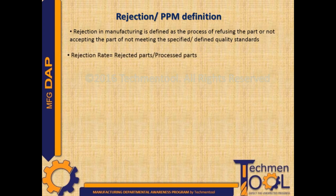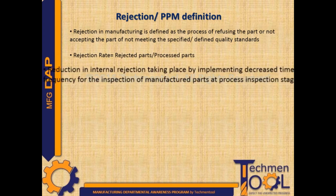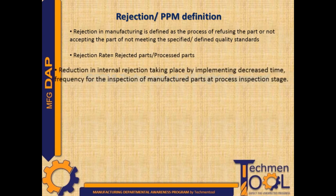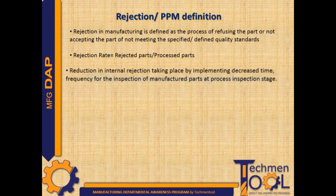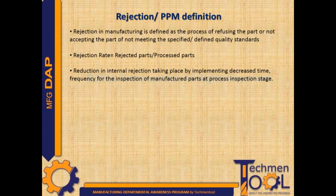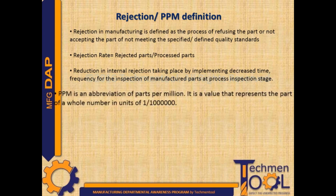Rejection rate is equal to rejected parts divided by processed parts. Reduction in internal rejection can be achieved by implementing decreased frequency for the inspection of manufactured parts at the process inspection stage.